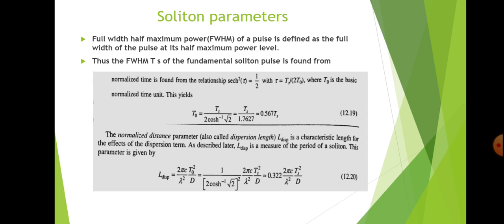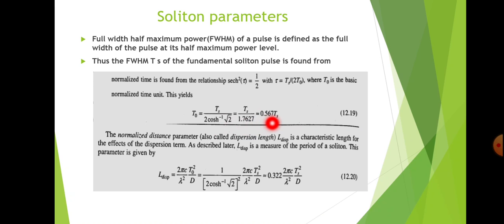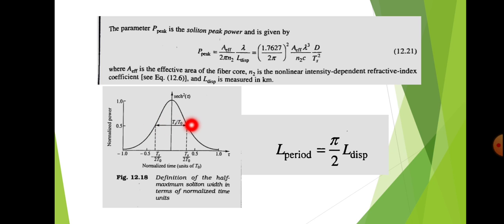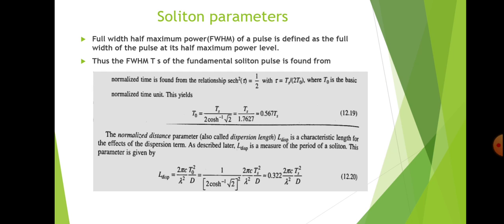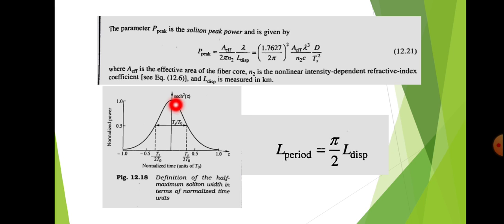The FWHM time period ts of a fundamental soliton pulse is found from: sech²(τ) = 1/2, where τ = ts/(2t0), and t0 is the basic normalized time unit. From this: t0 = ts / (2 cosh⁻¹(√2)) = ts / 1.7620 = 0.567 ts. This is the time period corresponding to full width half maximum power, represented in the figure as ts/t0.